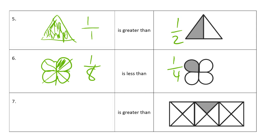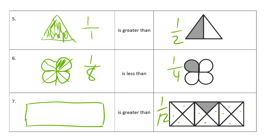And now this one here — one, two, three, four, five, six, seven, eight, nine, ten, eleven, twelve — so that's one-twelfth. I need something greater than a twelfth. Well, half is greater, but we need to get a rectangle about the same size. Half is the easiest fraction to draw usually. One-half is greater than one-twelfth.